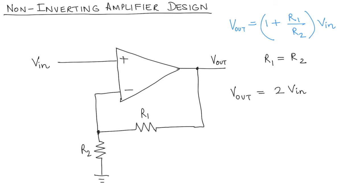For some values, most real op-amps would not work. Now if we assumed this op-amp was ideal, and if in real life we had an ideal op-amp, then you could use any values of R1 and R2 and it might work — but in real life it doesn't.